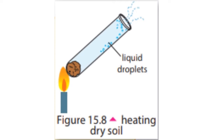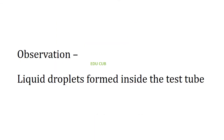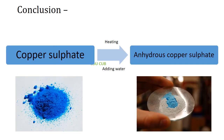Identify whether the liquid droplets that deposit on the walls of the test tube are water. Here you can observe that liquid droplets form inside the test tube — that is the observation in this practical. Now, how can we identify that the liquid droplets formed inside the test tube are water?